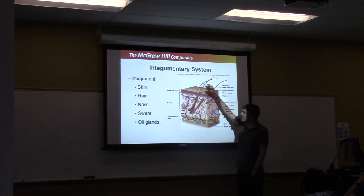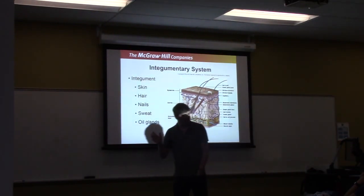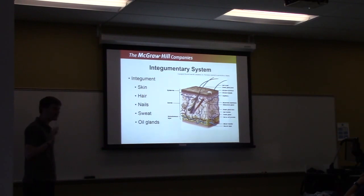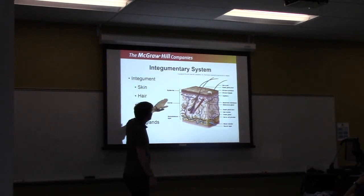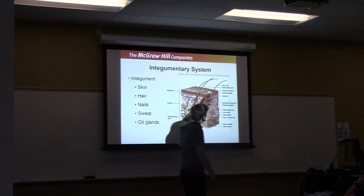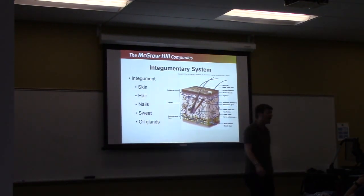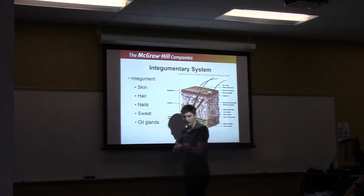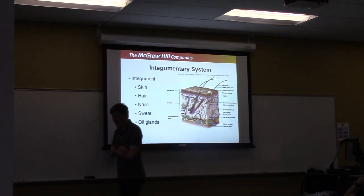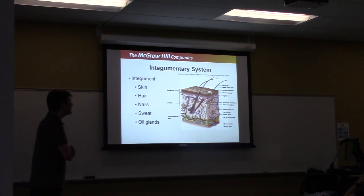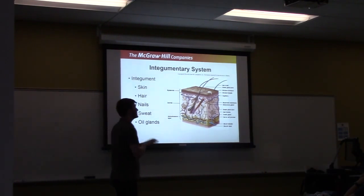A little bit about the anatomy — I'm never going to test you on this, I just want everyone on the same page. The skin is made up of three layers: the epidermis, the dermis, and the subcutaneous layer. The most superficial layer is the epidermis, where you have that dead keratinized skin layer. This is a rough, hard-to-penetrate surface that protects your body from many infections — it's one of the biggest defenses of the skin.